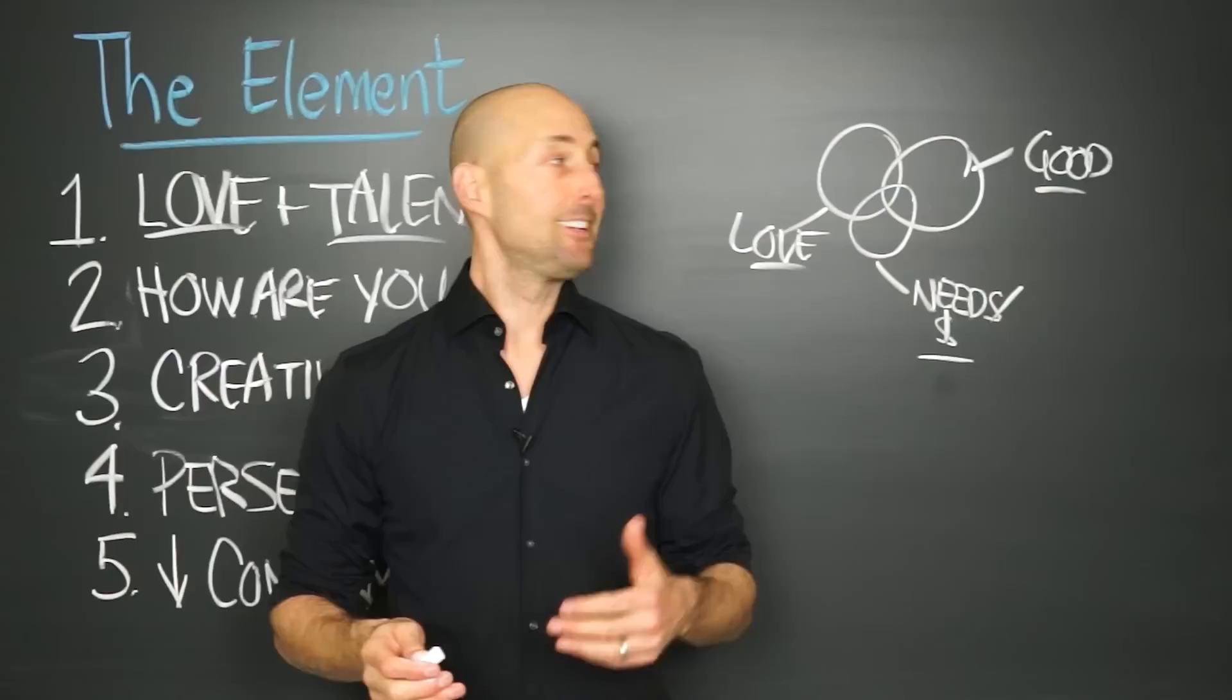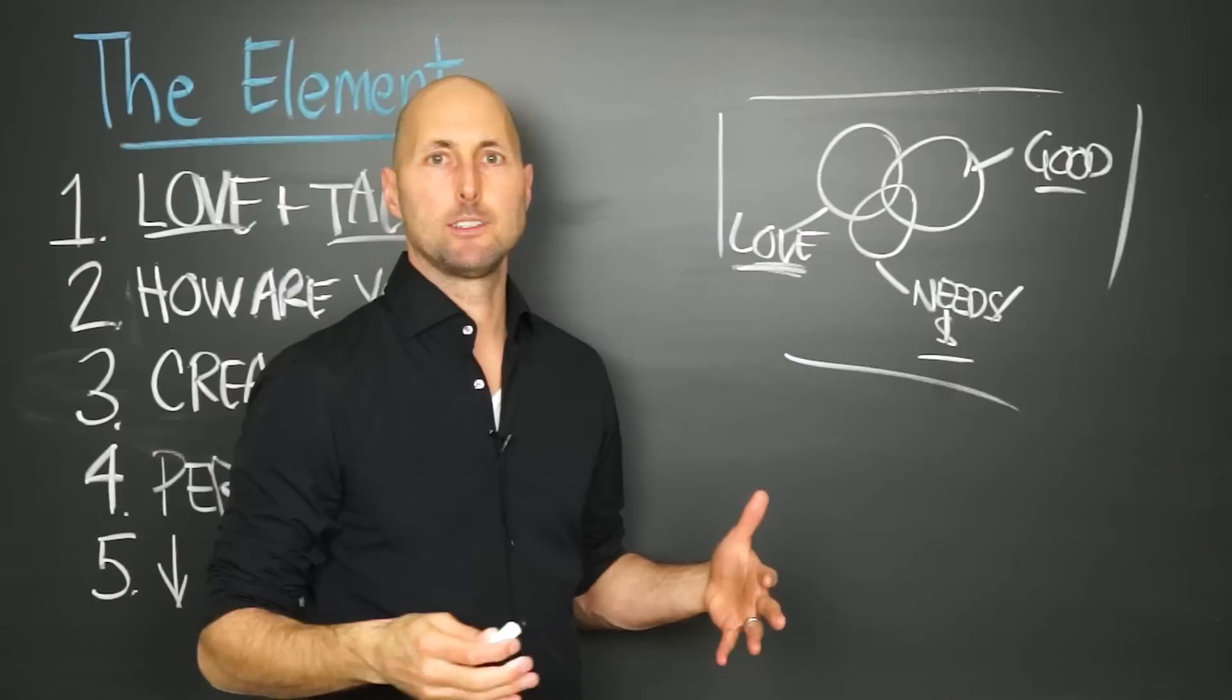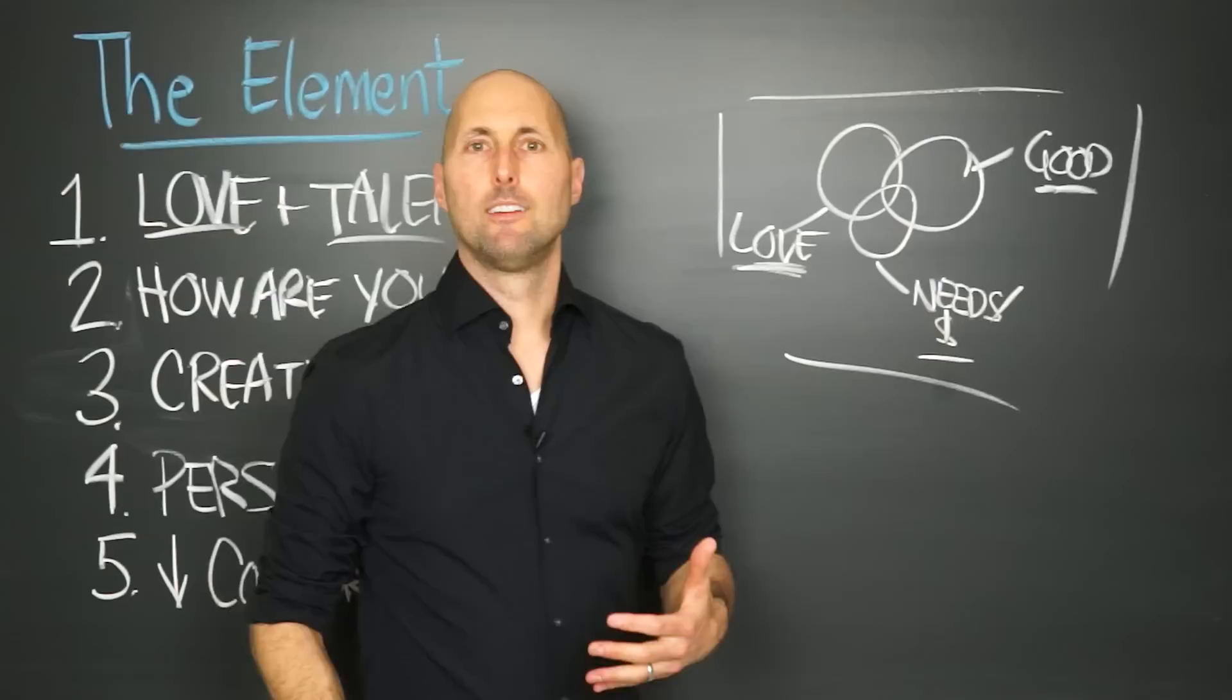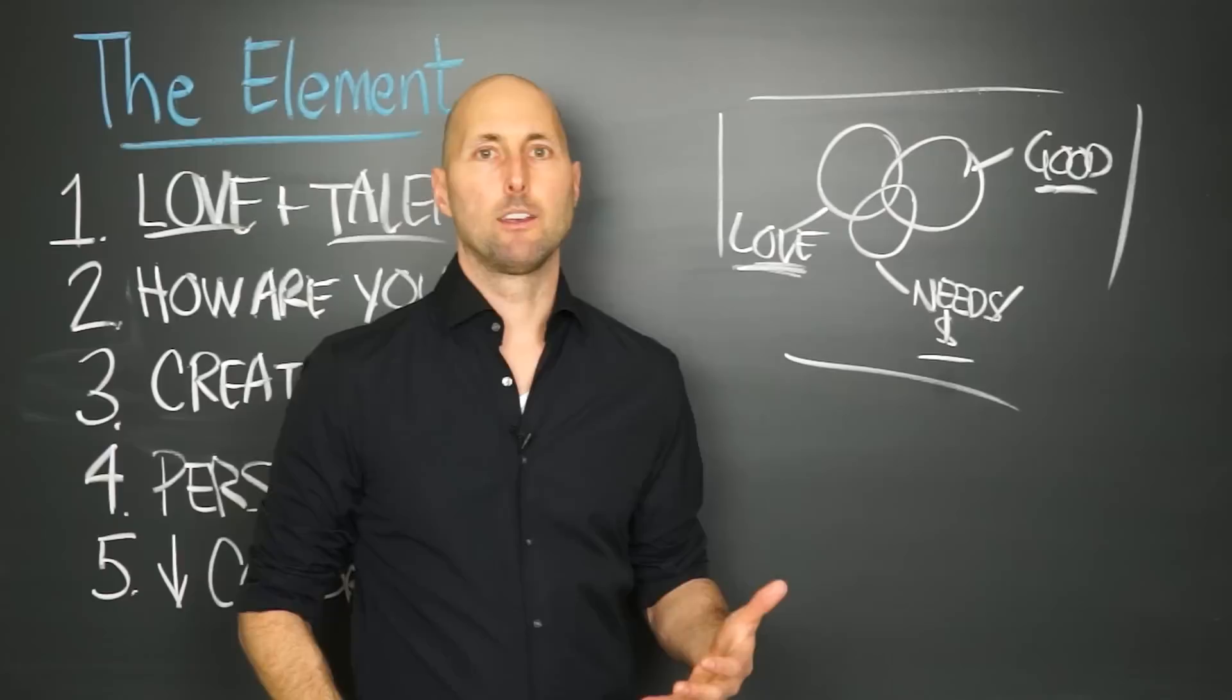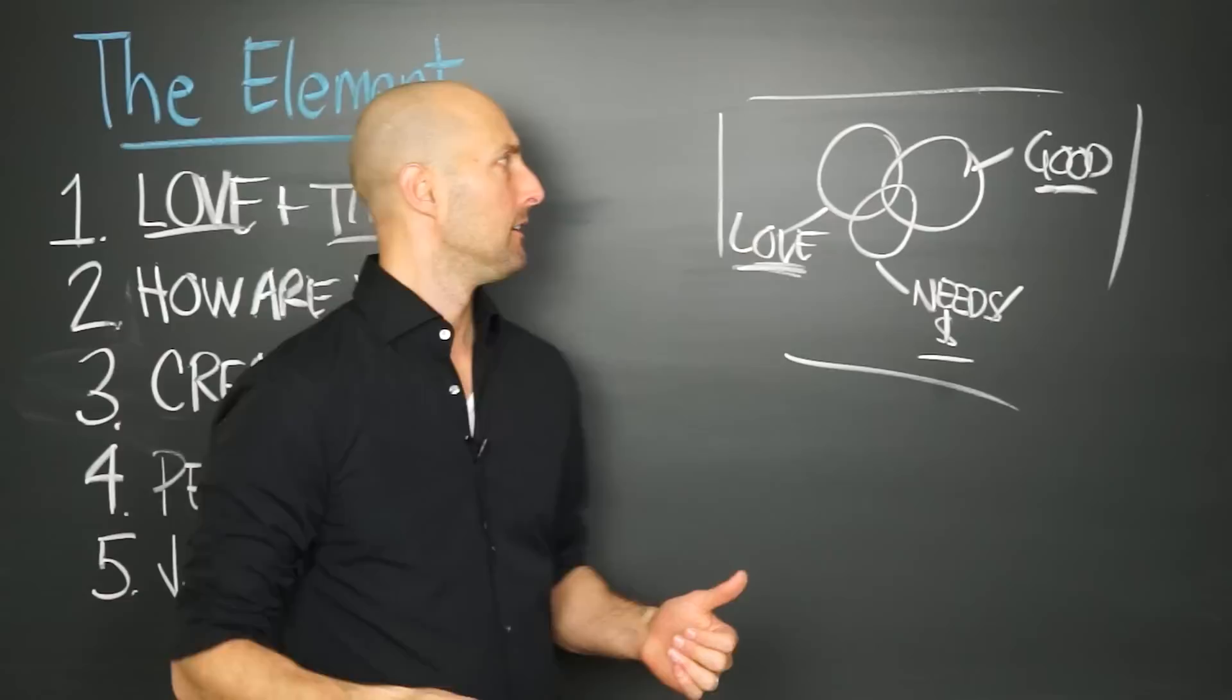He talks about something called the hedgehog concept, which is basically these three ideas. What do you love to do? So much you'd pay to do it. Fires you up. Time evaporates. What are you good at? And Collins says, what are you so good at that you could, in fact, be among the best in the world at? Great businesses are focused on what they love to do and what they think they can be the best in the world at. Truly great at. So where's that for you? Great individuals do the same thing.